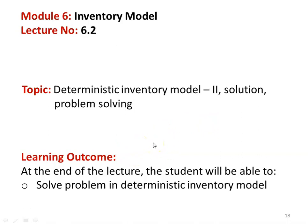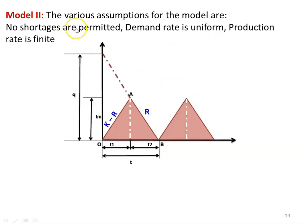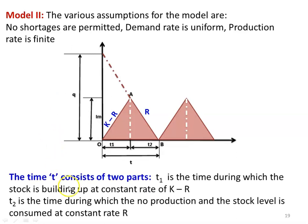The learning outcome for students: at the end of the lecture, the student will be able to solve problems in the deterministic inventory model. For model number 2, the various assumptions are: no shortage is permitted, demand rate is uniform, and production rate is finite. In the earlier model, we discussed production rate as infinite; now here production rate is finite.